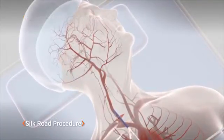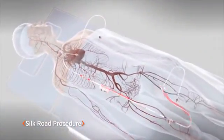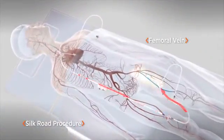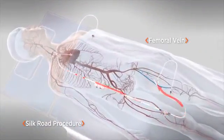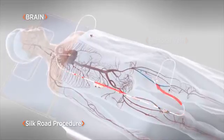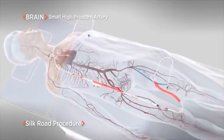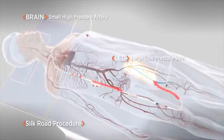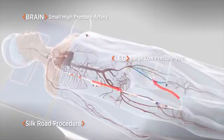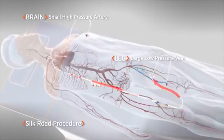The sheath is connected to a circuit outside the body that directs the blood flow into the femoral vein. The connection between the high-pressure arterial system in the brain and the low-pressure vein in the leg creates a pressure gradient, causing blood to move backwards in the carotid arteries.